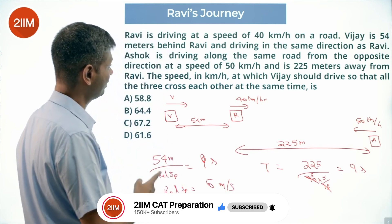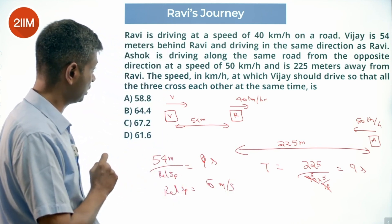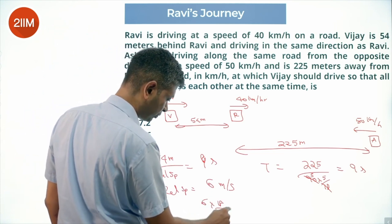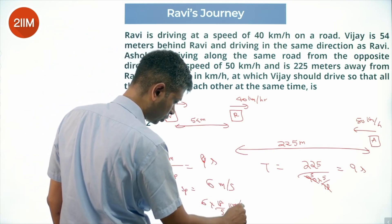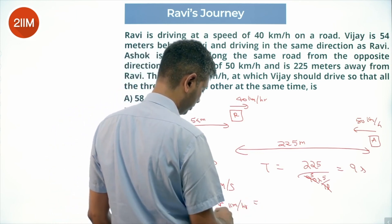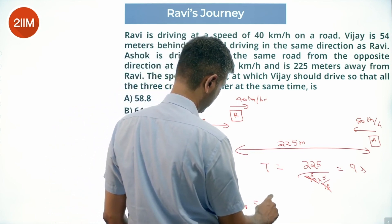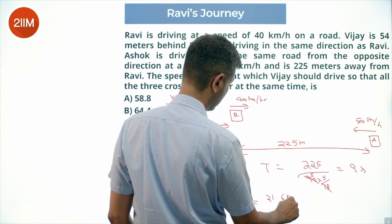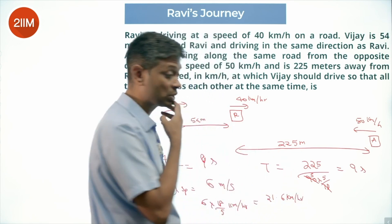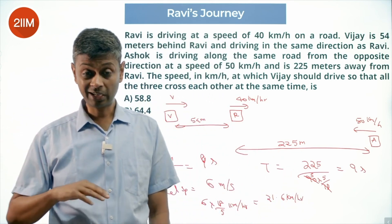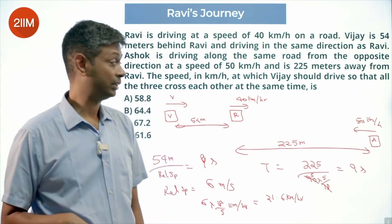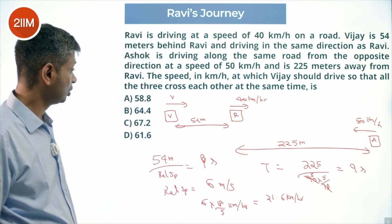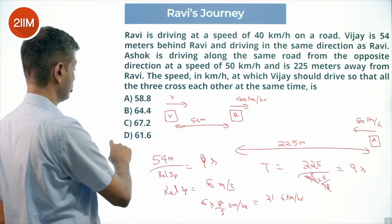Converting to kilometers per hour, since that is what the answer requires: relative speed is 6 multiplied by 18/5 kilometers per hour, which is 108/5, equal to 21.6 kilometers per hour. So Vijay should be traveling 21.6 kilometers per hour higher than Ravi, meaning Vijay's speed is 40 plus 21.6, which equals 61.6 kilometers per hour.